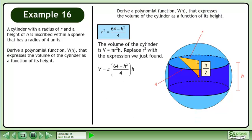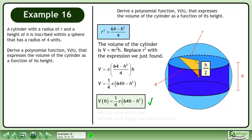The volume of the cylinder is V equals π r squared h. Replace r squared with the expression we just found. Clean up the expression. We can now write the volume as a single variable function. The answer is V(h) equals 1 over 4 π times (64h minus h cubed).